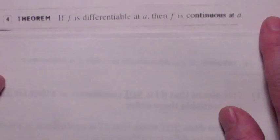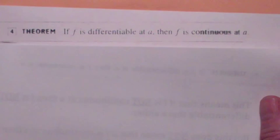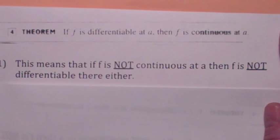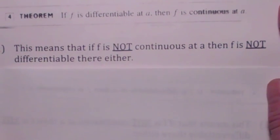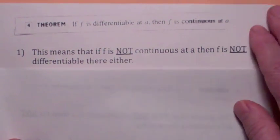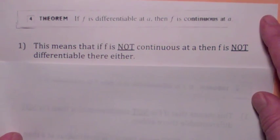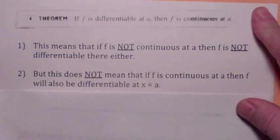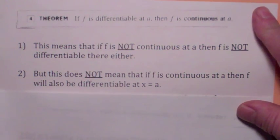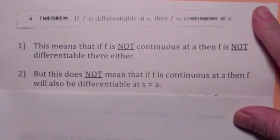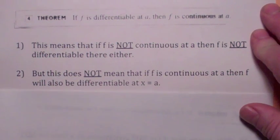Let's get back to this theorem: if a function is differentiable at a point, then it will also be continuous there. The contrapositive says: if a function is not continuous at a point, then it's not differentiable there either. And didn't we just look at three examples of functions that are continuous at a point but not differentiable there?